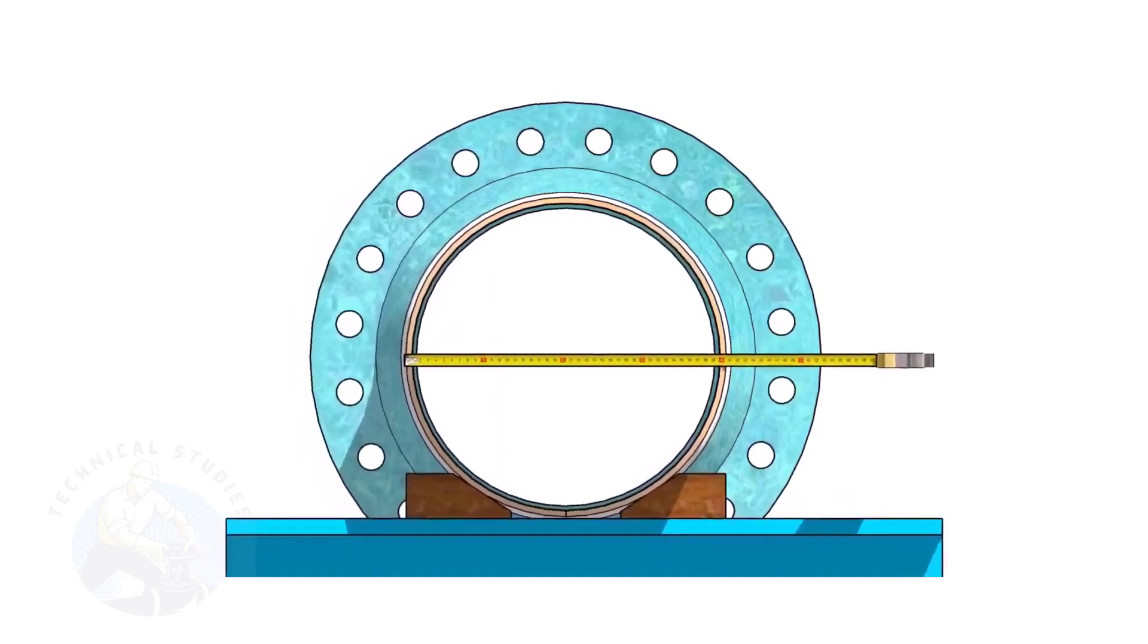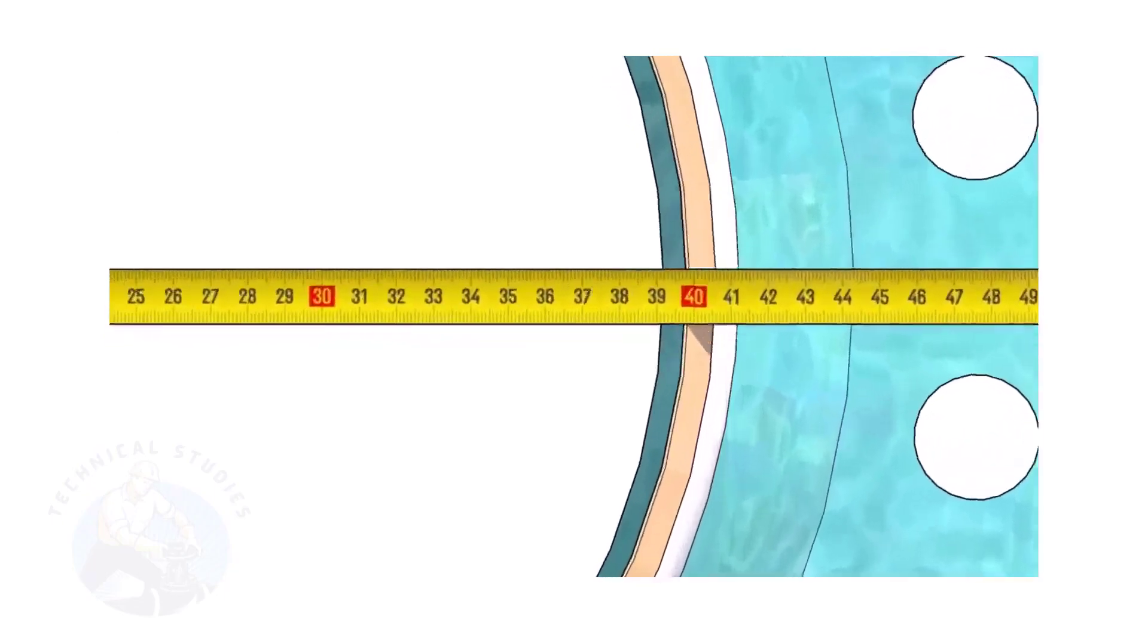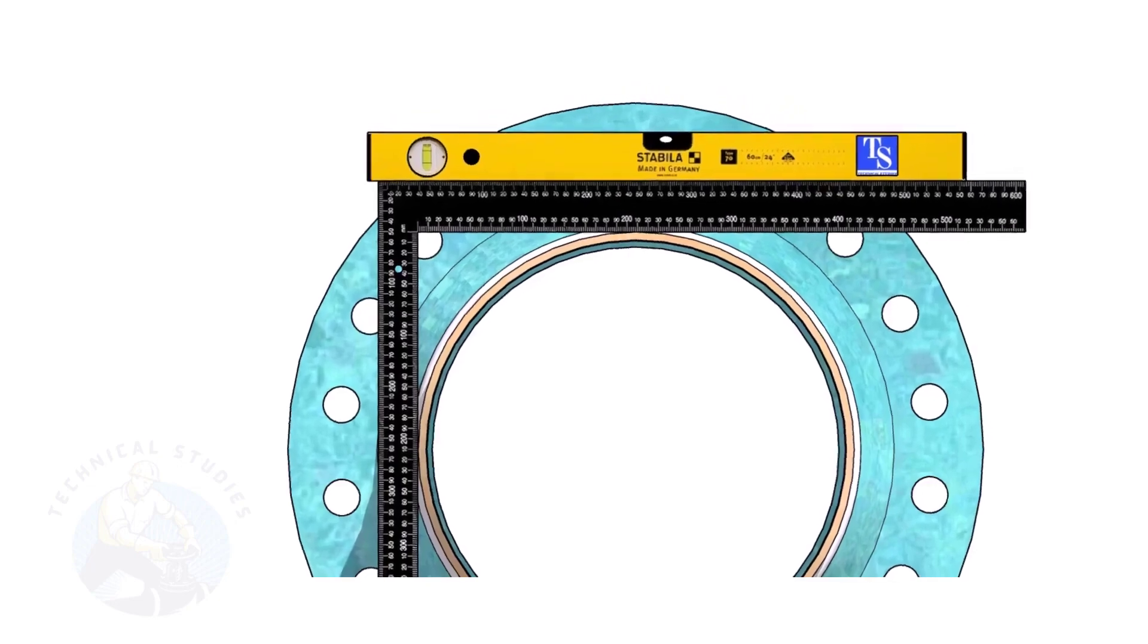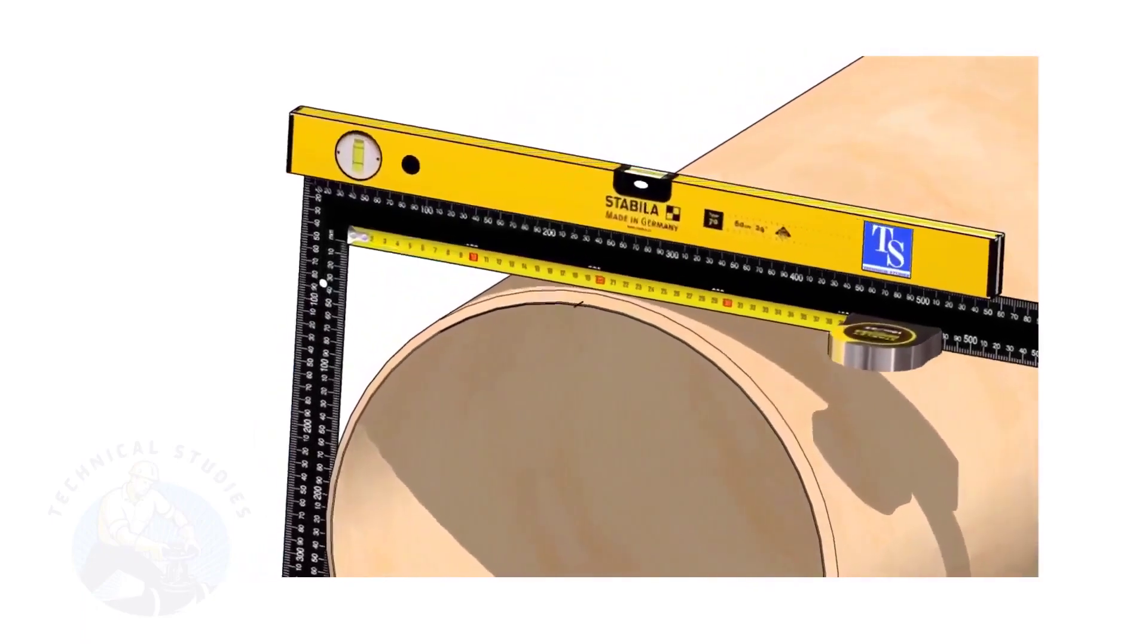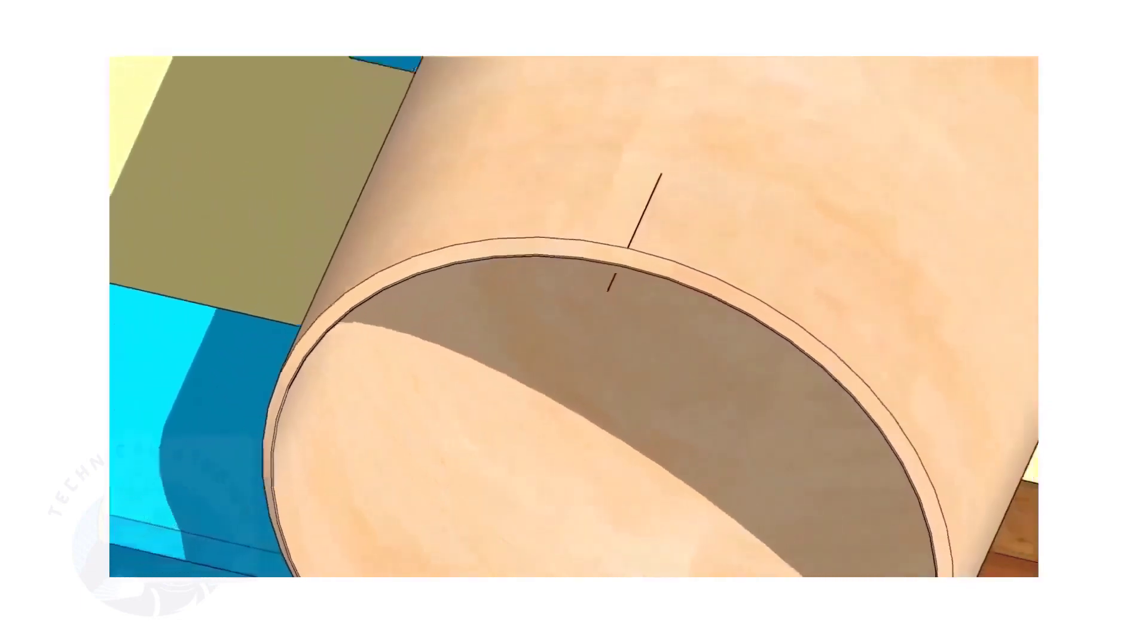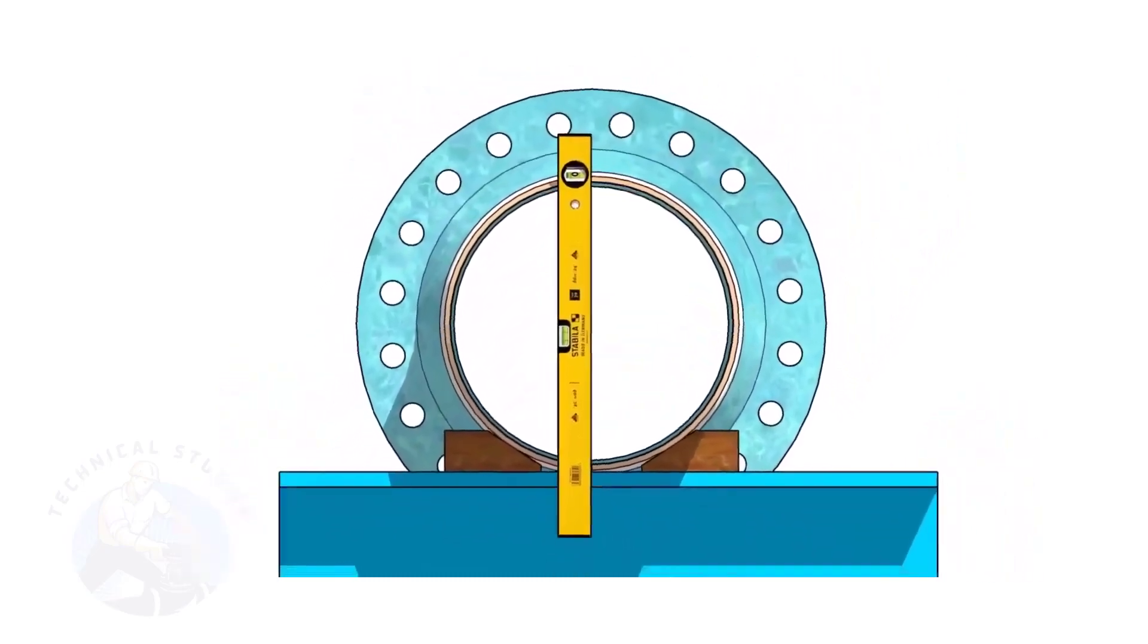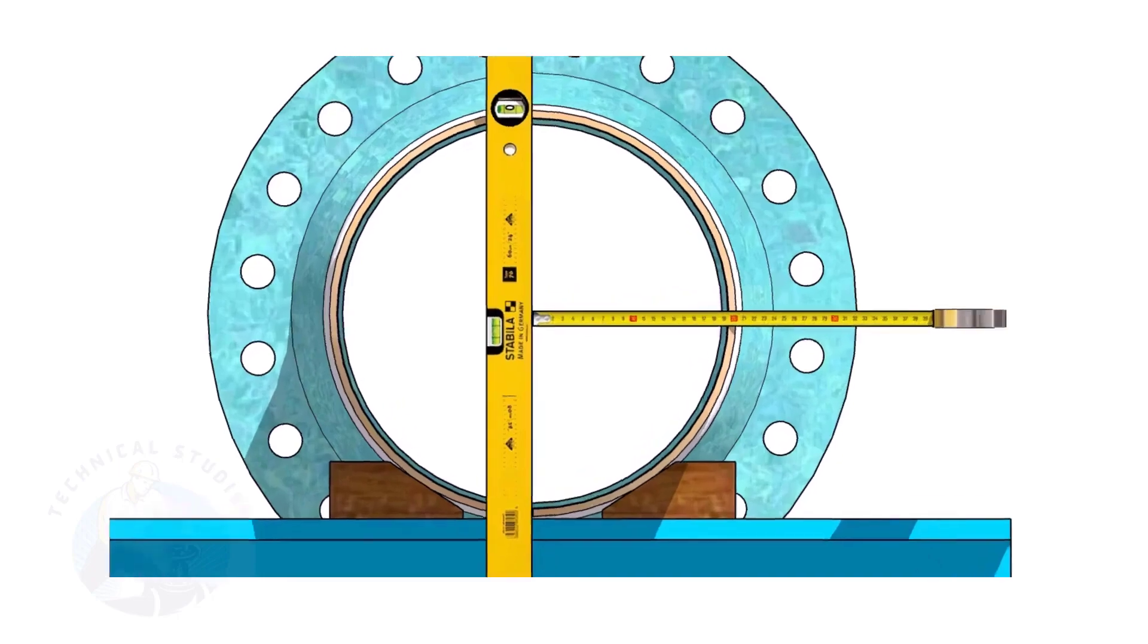Check the outer diameter of the pipe. Here, the diameter of the pipe is 406 millimeters. Hold a large right angle on the pipe as shown. Put a spirit level on the right angle and correct the top level. Mark half OD of the pipe on the top side. Here, the half OD is 203 millimeters. Hold the spirit level vertically and transfer the top center mark to the bottom side, as shown.